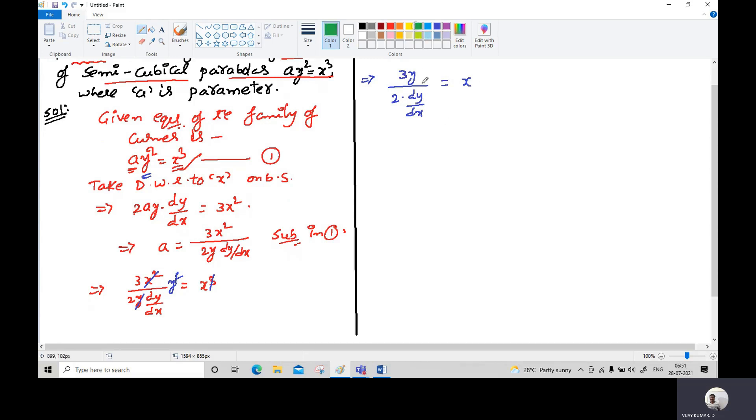Taking dy/dx to one side and x to the denominator, you will get dy/dx = 3y/2x. Take this as equation 1. Clearly, this equation does not contain any parameter and we obtained it by taking the derivative with respect to x. That is why this is called the differential equation of the given family.